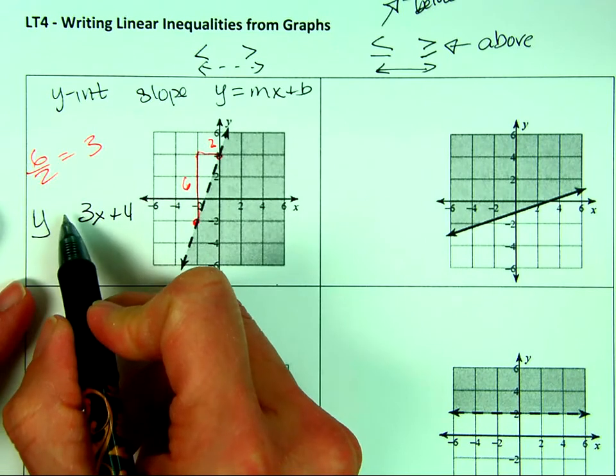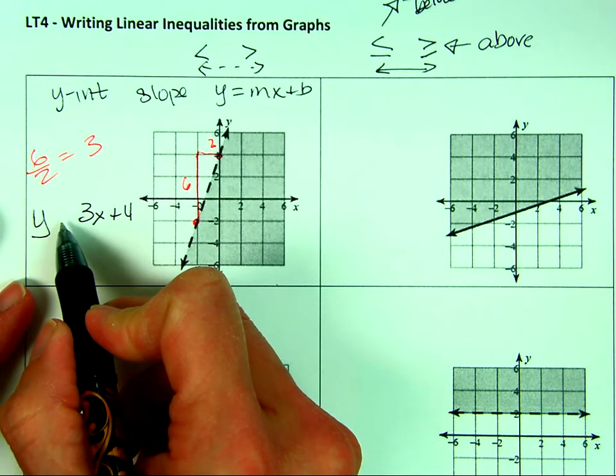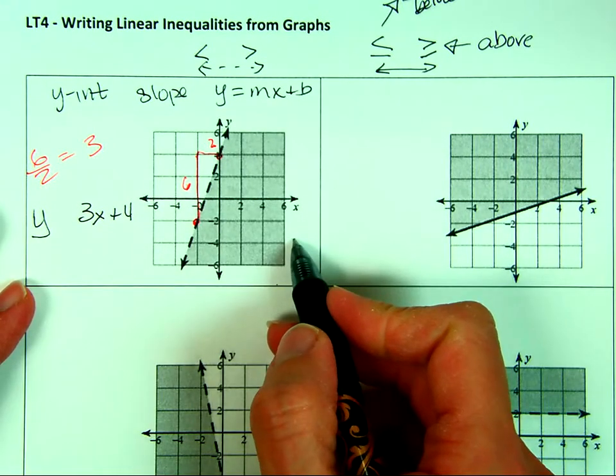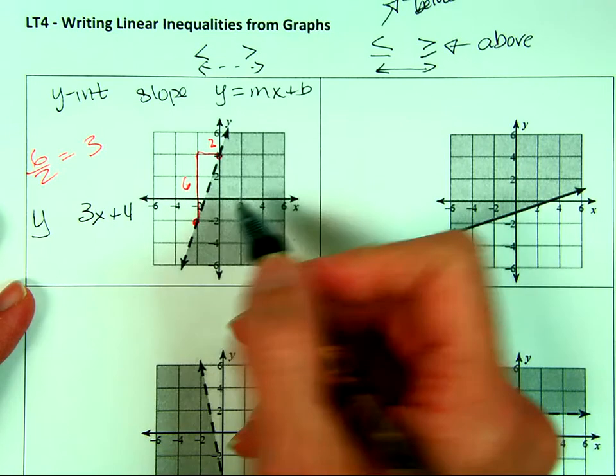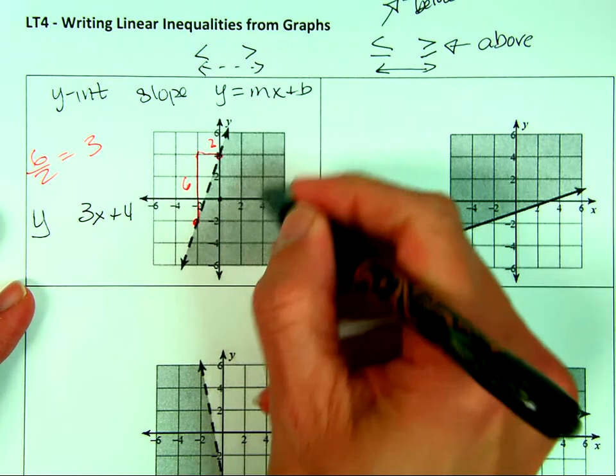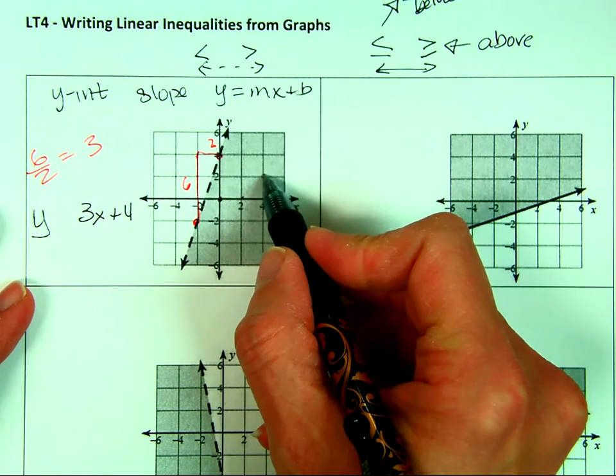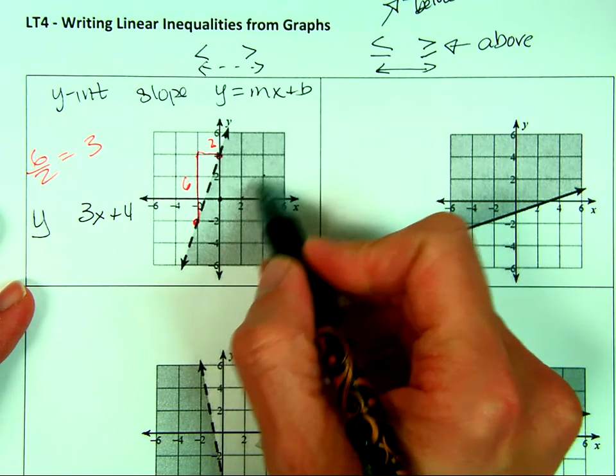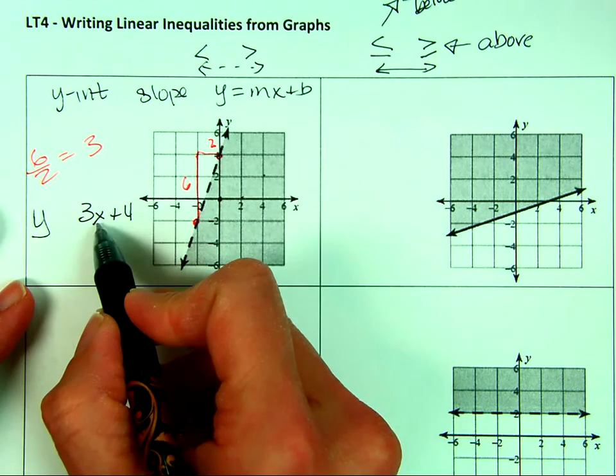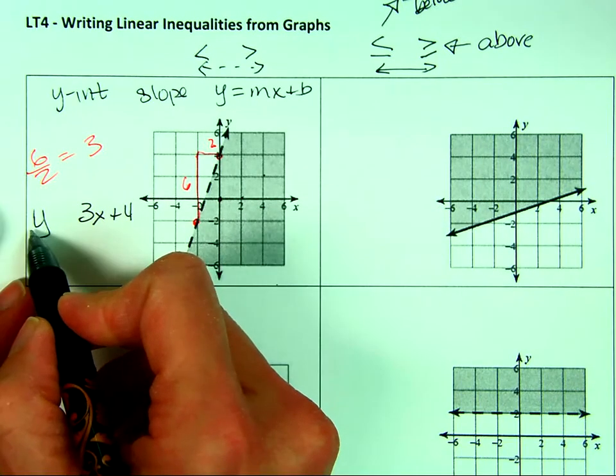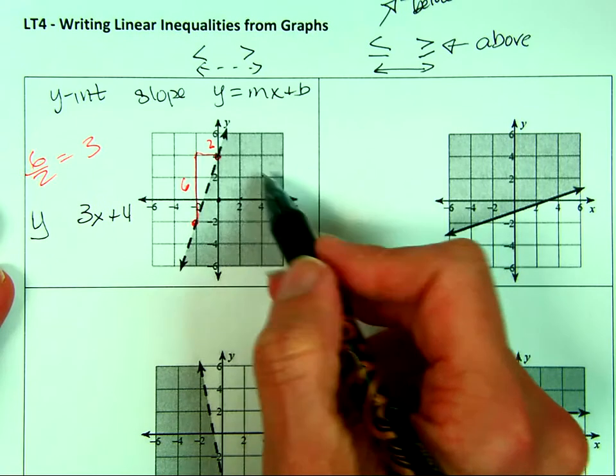And then I try to determine, is it a less than or greater than sign? So to me, it's below the line, but I'm not sure. So I plug a point in. The easiest point. You can plug any point in you want. 2, 0, 4, 2. You plug any point in. You take the x value, plug it in for x. The y value, plug it in for y and see if it's true. If it's true, you know it's in the shaded region.